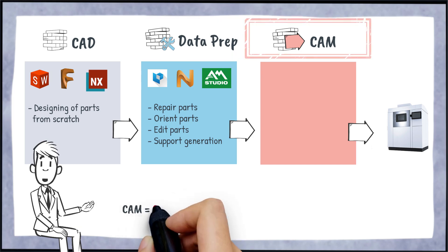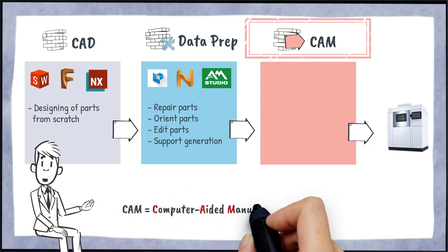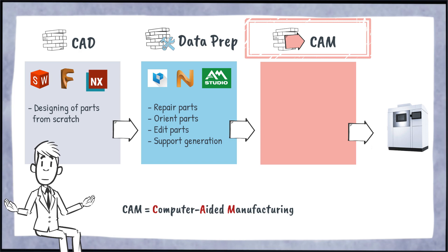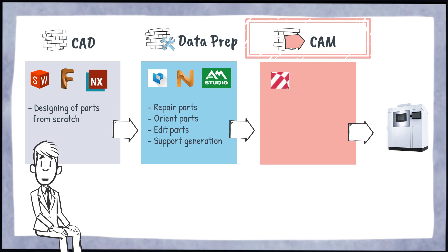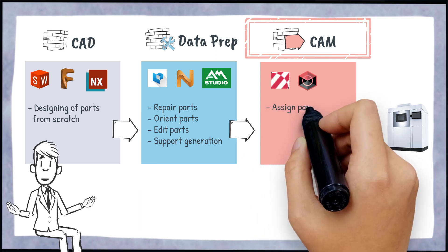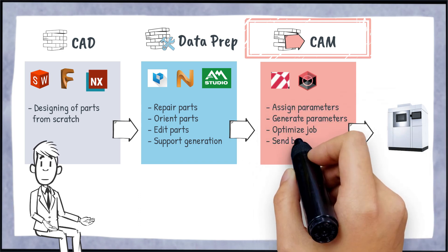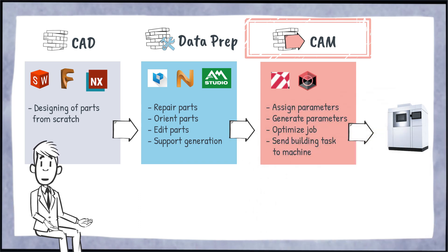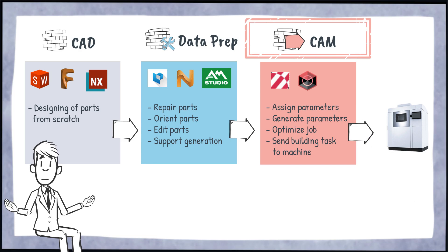CAM stands for computer-aided manufacturing. The CAM software at EOS is the PSW for most P systems and EOSPrint for some P and all metal systems. In the CAM software you can, among other things, assign exposure parameters, create new exposure parameters, and send the build task to the machine. There are also some useful functions to optimize the build job in various ways.